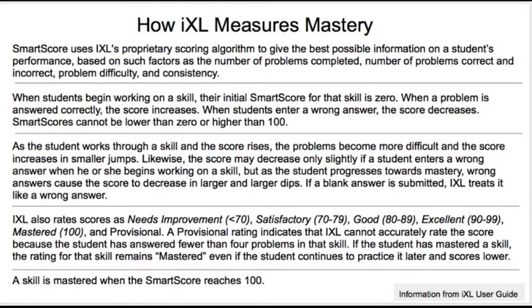The score may decrease only slightly if a student enters a wrong answer when they begin working on a skill. But as a student progresses towards mastery, wrong answers cause the score to decrease in larger and larger amounts. If a blank answer is submitted, iXL treats it like a wrong answer. iXL also rates scores as: needs improvement (less than 70), satisfactory (70 to 79), good (80 to 89), excellent (90 to 99), and mastered at 100. Provisional means that iXL cannot actually rate the score because you haven't answered enough.